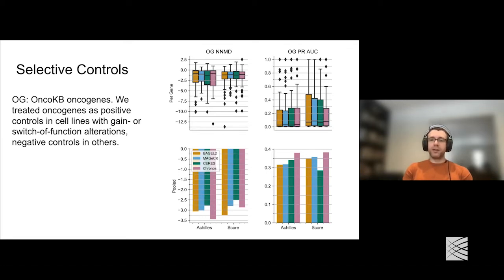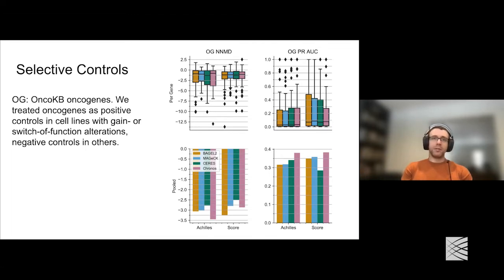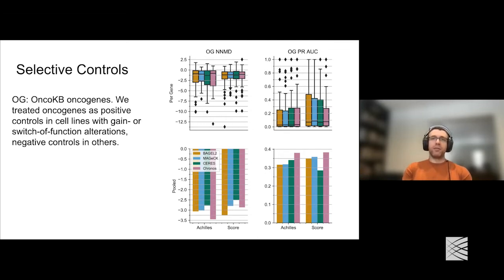We can use a few sets of genes known to be dependent in certain contexts. OncoKB curates a set of oncogenes thought to drive cancer given a particular alteration—we treated these as positive controls in cell lines where that alteration is present. For example, BRAF mutation drives many melanomas; if you have a BRAF gain-of-function mutation, we expect knocking out BRAF will be deleterious for cell survival. So BRAF is a positive control in cell lines with that BRAF alteration, and a negative control in cell lines without it. We can evaluate how well those two groups of cell lines separate on a per-gene basis.